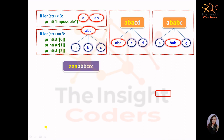Let's start with a simple example: 'aaabbbccc'. The output should obviously be 'aaa' as the first string, 'bbb' as the second, and 'ccc' as the third — all palindromes. Now let's trace through how the logic achieves this.